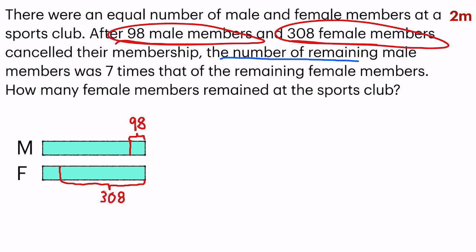Now the next part — they said that the number of remaining male members was seven times that of female. So this portion is seven times of this, which means there are seven units for male. And for female, since it's seven times, there will be only one unit.